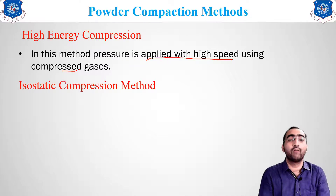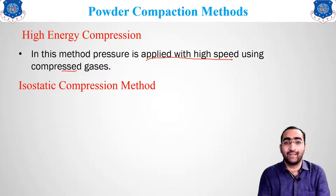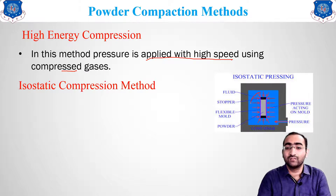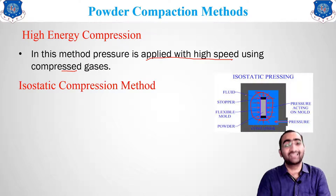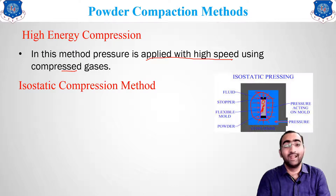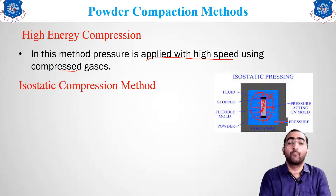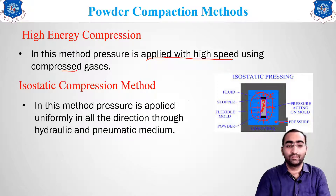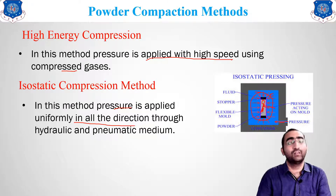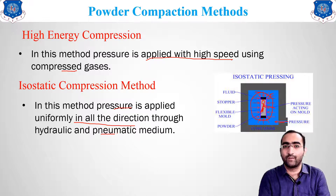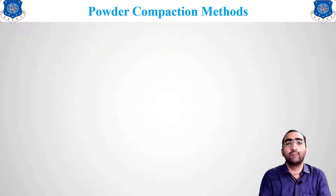The sixth method is isostatic compression. Liquid is filled all around the material, and the same uniform load is applied from all directions. The powder is enclosed, and the liquid transfers pressure onto the material uniformly in all directions through hydraulic or pneumatic medium, achieving perfect compression.